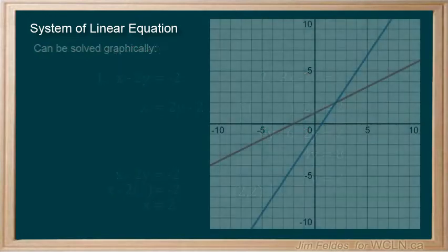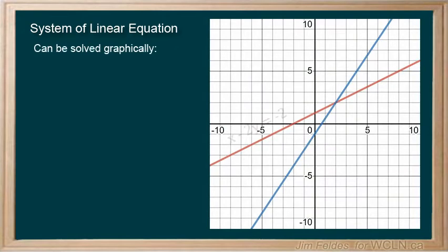You will also likely learn to solve by graphing. Because our two relationships have the same variables, we can show them on the same plane. We see that our solution is once again the point (2,2).